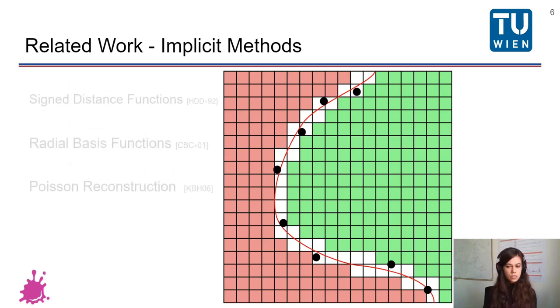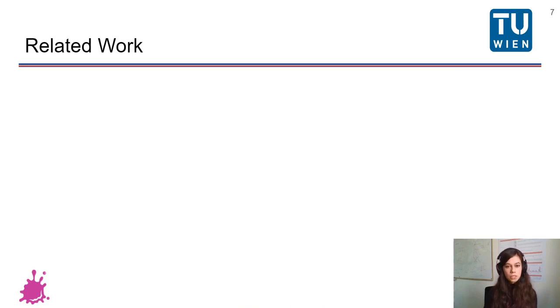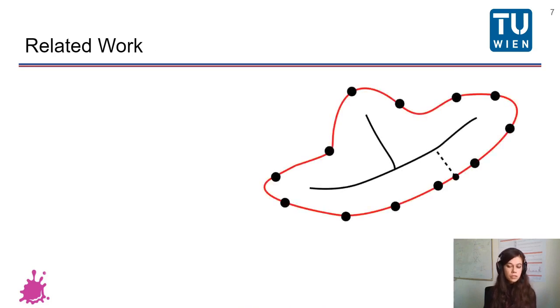In terms of implicit methods, these usually try to compute a function, an inside-outside function and then get the zero set of that function as the actual curve reconstruction. But now going back to the explicit method, because also our method is a type of explicit method, I'll introduce some mathematical concepts.